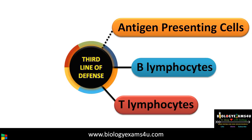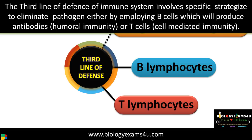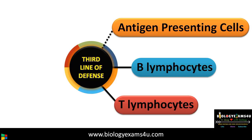Let's begin with the definition of the third line of defense. The third line of defense of the immune system involves specific strategies to eliminate pathogens either by employing B cells that produce antibodies, or T cells that regulate cell-mediated immunity. The key players in the third line of defense are T lymphocytes and B lymphocytes, which are assisted by antigen presenting cells. Antigen presenting cells include macrophages, dendritic cells, and B cells.